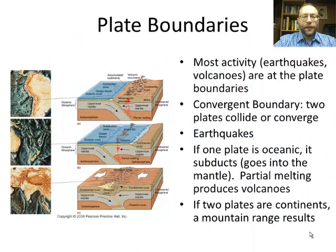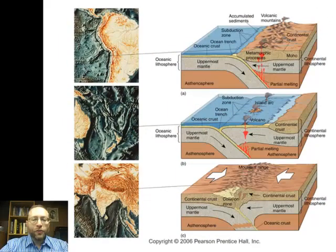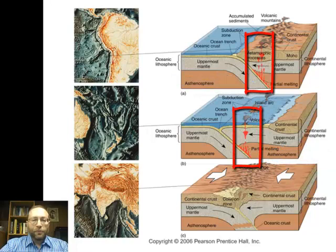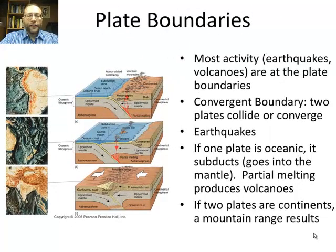Now we come to the different types of plate boundaries. Most activity — meaning earthquakes and volcanoes — is found at the plate boundaries. What we see pictured here are three types of convergent boundaries. A convergent boundary is where two plates collide together or converge. The top two shown here involve oceanic crust — either oceanic-oceanic or oceanic-continental. In both cases, the oceanic crust will subduct, or go down into the mantle. As it goes down, it causes partial melting. Parts of it will melt, and the magma that results then rises to the surface, making volcanoes. It's always the oceanic crust that goes down.